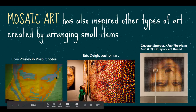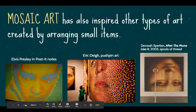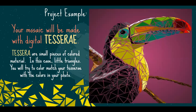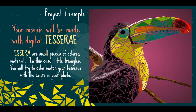We call this kind of installation art, where one artist used all post-it notes and another artist used all pushpins to create artworks. We're going to use Google Draw to create a mosaic using small shapes.